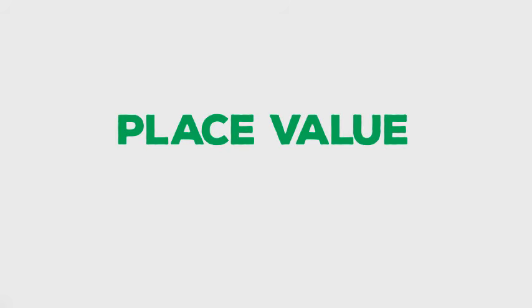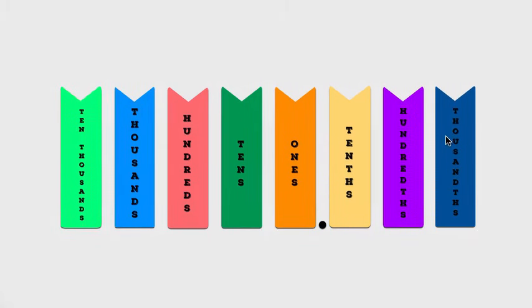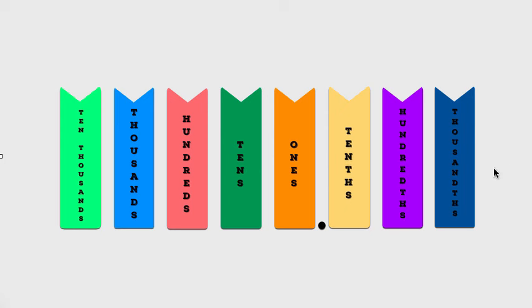All right, so today we're continuing talking about place value. If you remember yesterday we discussed different types of place value and how those move around when we multiply by 10, and we were trying to look for a pattern. We're going to go a little deeper into that pattern today. Just a brief overview: ones, tens, hundreds, thousands, ten thousands, and then we go to the right of the decimal and we see tenths, hundredths, thousandths. We were looking at that pattern.